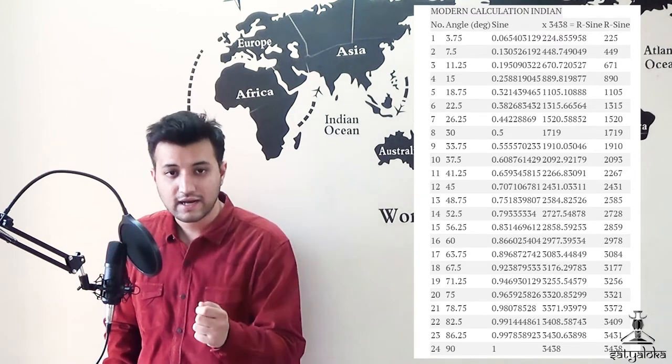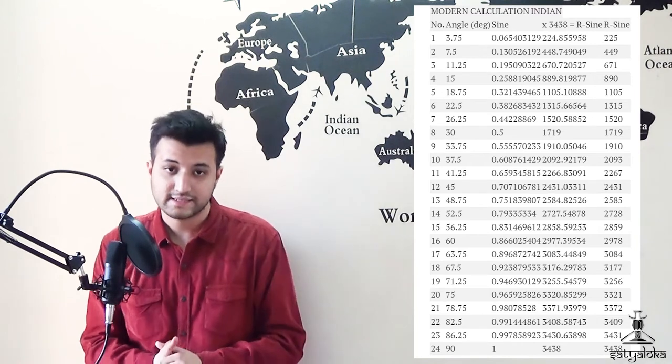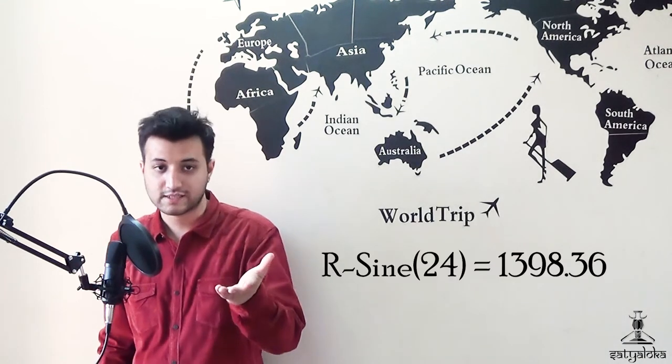Focusing on the last two columns: the second-last column is a modern calculation of the R-sine of the angle, while the last column is the Indian R-sine value. This table shows that the precision of the Indian R-sine is 1/3438. Calculating the R-sine of 24 degrees: sin(24°) × 3438 = 1398.36. The modern R-sine of 24 degrees is 1398.36 — and knowing that Indian R-sines are rounded to the nearest integer, the Surya Siddhanta would have stated 24 degrees as either 1399 or 1398, but never 1397. That is, 24 degrees can never be represented as 1397 in the Indian system.